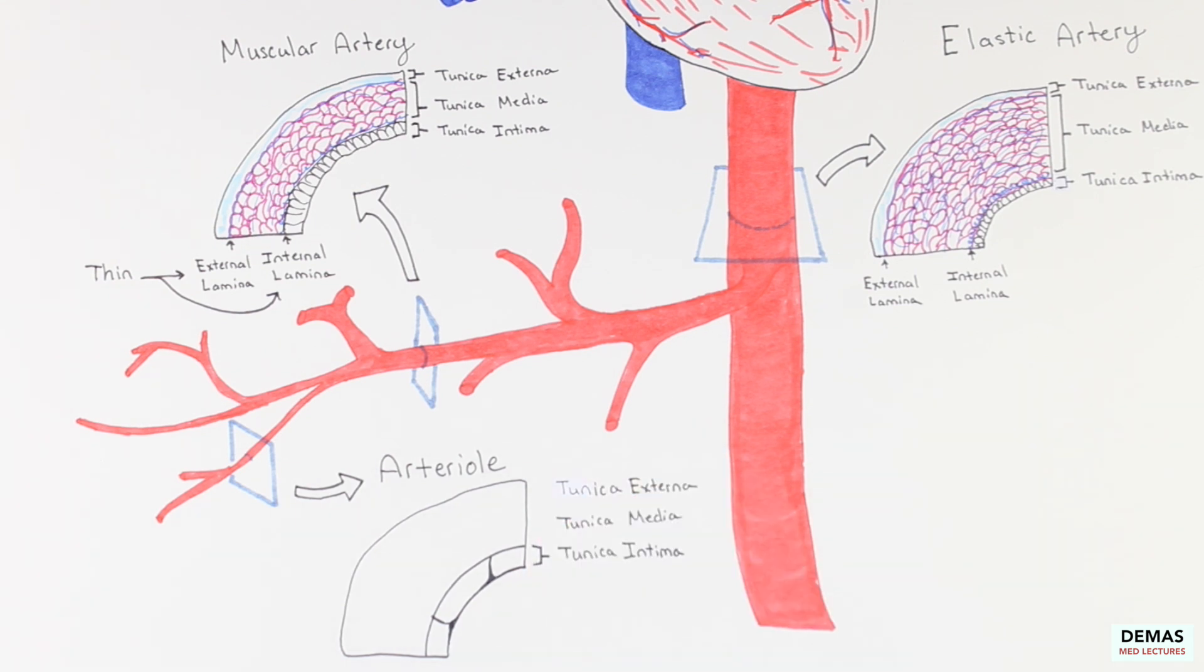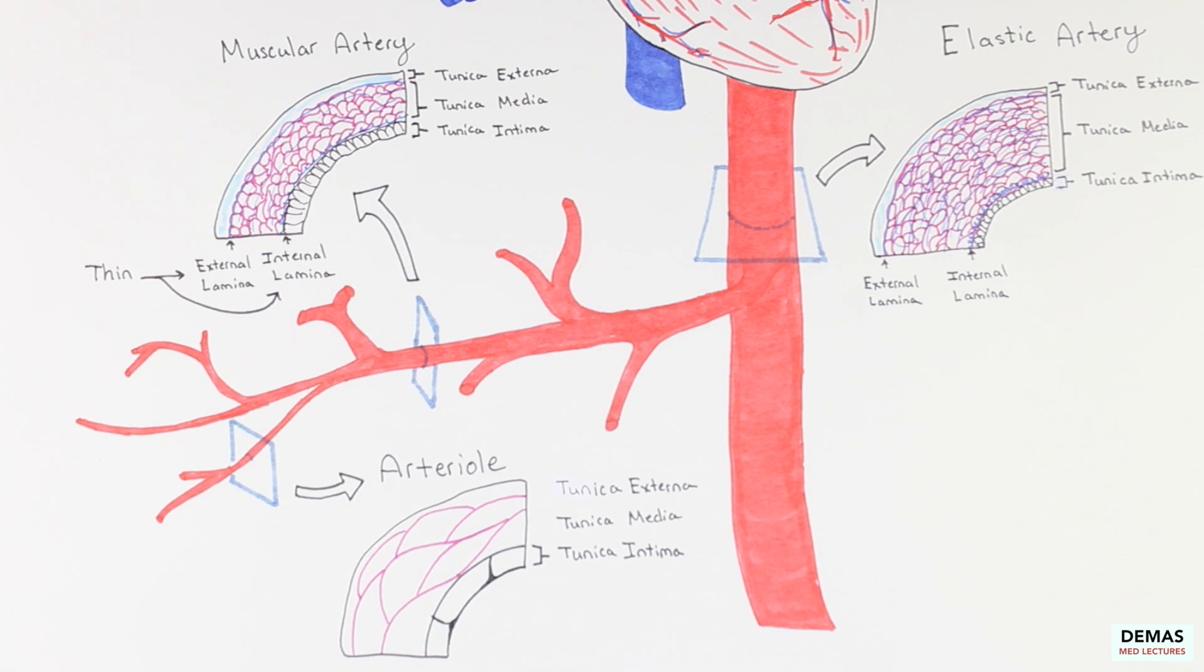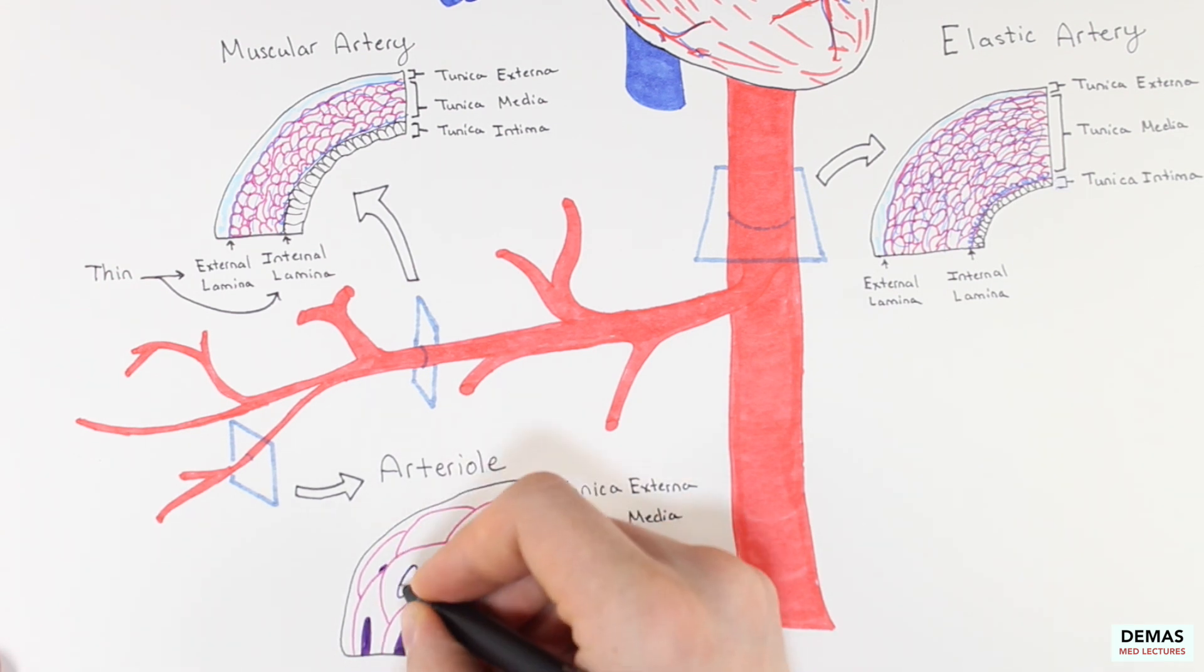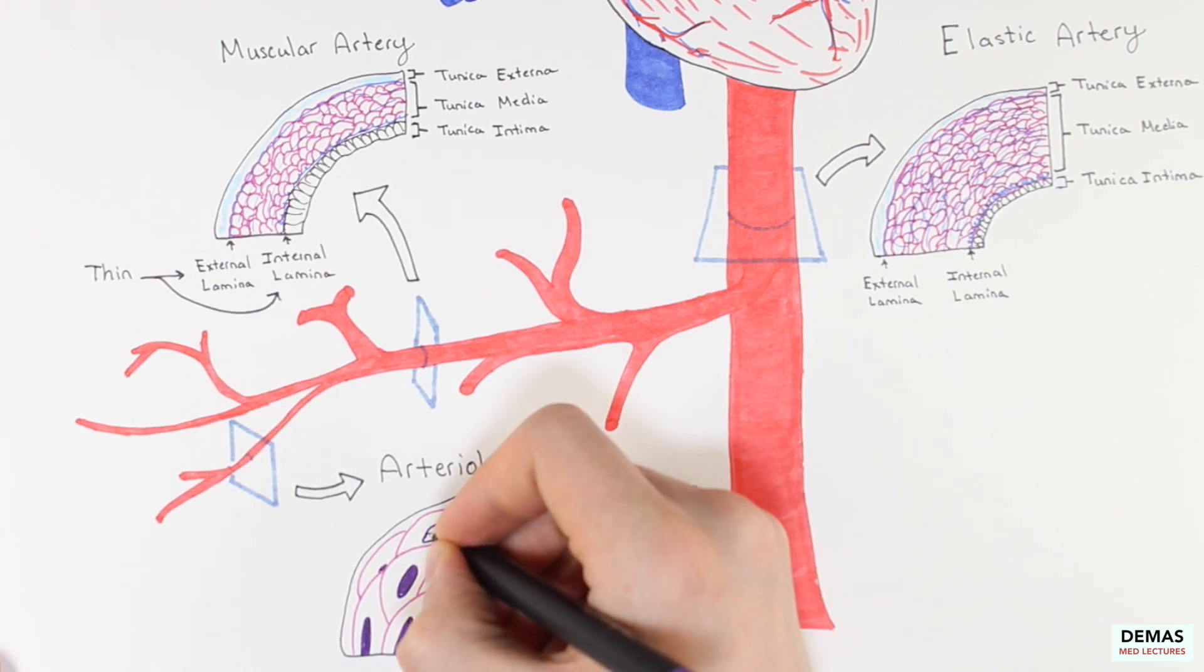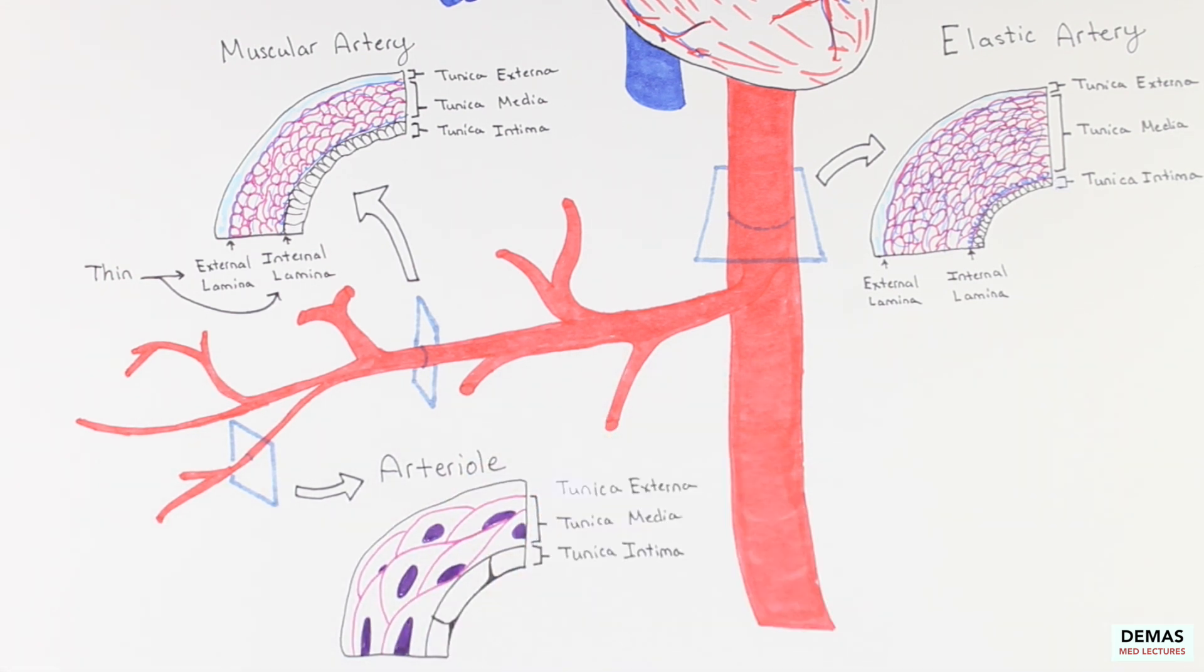The arteriole has a very narrow endothelial tunica intima. It has a one to three cell layer thick tunica media, which lacks elastic fibers, and it also contains a thin tunica externa.